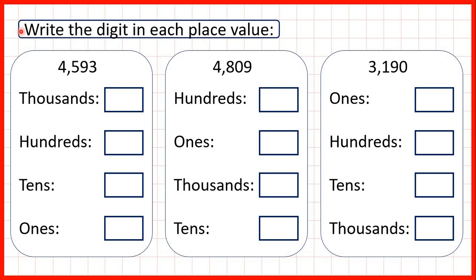We need to write the digit in each place value. So remember, we count place values from the right. So first we have our ones, then our tens, hundreds and thousands digits. At least that's for whole numbers.